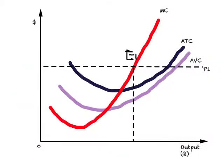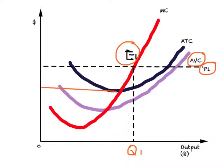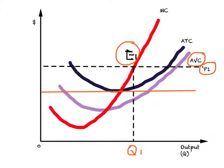This next diagram is the same as the previous one except that I have now included the average variable cost curve. Given world price P1, which the firm takes as given, E1 is the equilibrium point and the firm produces Q1 units of output. Now suppose the world price falls and comes down to a new level — E2 becomes the equilibrium point for the firm and output produced will be Q2.